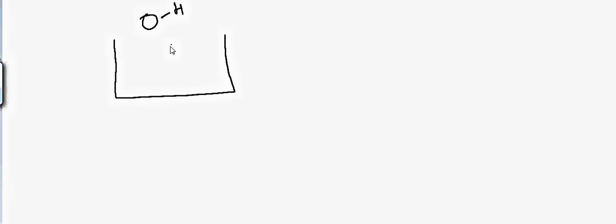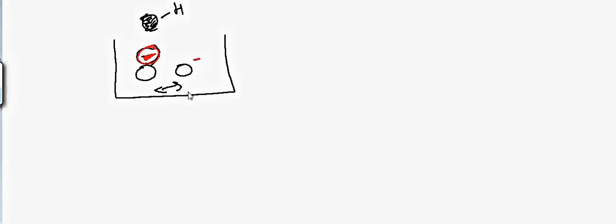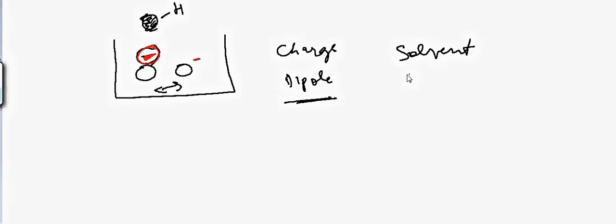When you dissolve this particle into water, it might lose the H and become negatively charged. If particles dissolve like this and become negatively charged, they will have a different interaction between them — they will show repulsion because now they are charged. There are many things which can change the charge or the dipole, and that will change the interaction between the two particles. This is also one of the solvent effects: solvent effect due to change in charge or dipole.